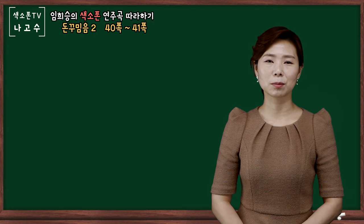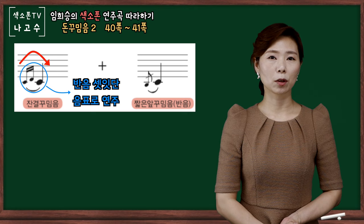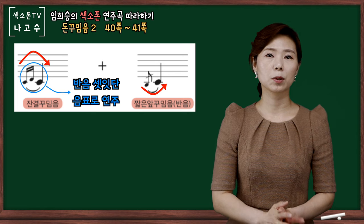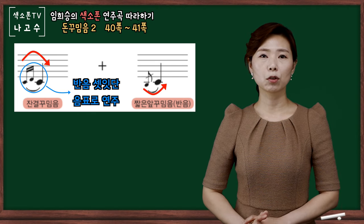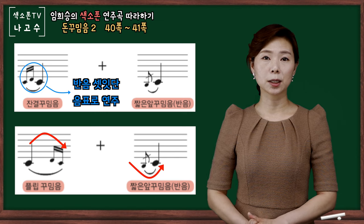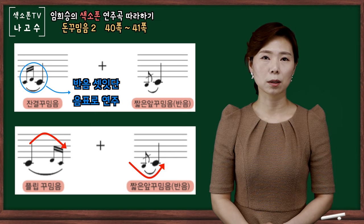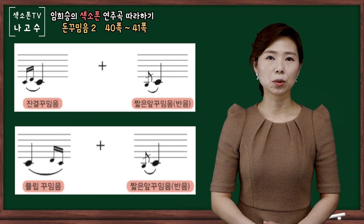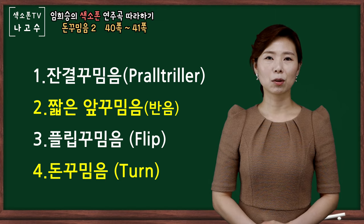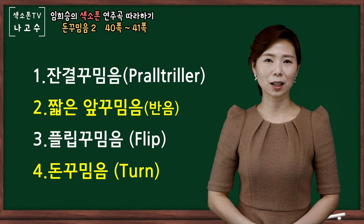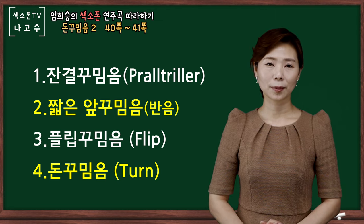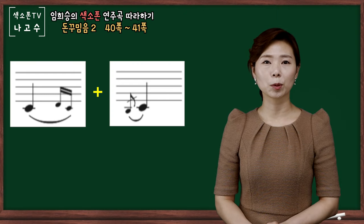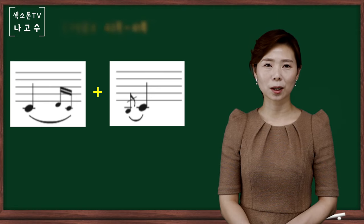그 강의를 참고하시면 좋겠습니다. 잔결 꾸밈음 연습 후에 반음 앞 꾸밈음을 추가해서 연습하시면 돈 꾸밈음 첫 번째 형태가 되겠고, 플랫 꾸밈음 연습 후에 반음 짧은 앞 꾸밈음을 연결하여서 연습하시면 돈 꾸밈음 두 번째 형태가 되겠습니다. 이번 강의에서는 플랫 꾸밈음 플러스 반음 짧은 앞 꾸밈음의 형태로 돈 꾸밈음을 연습해 보도록 하겠습니다.